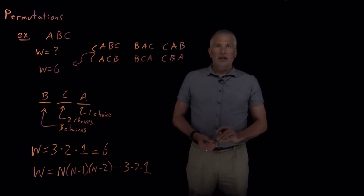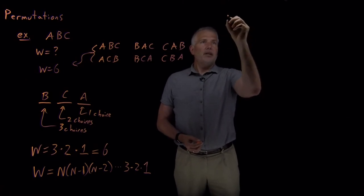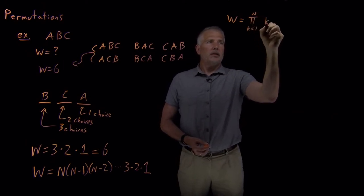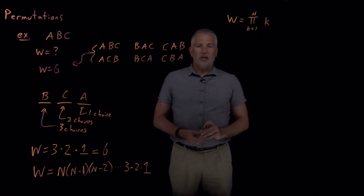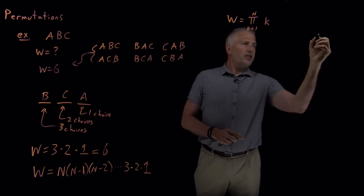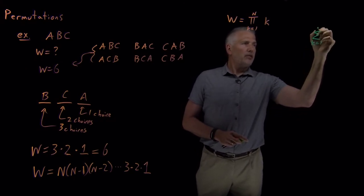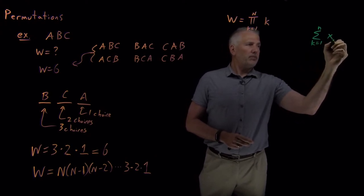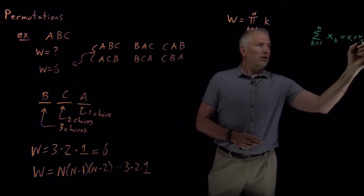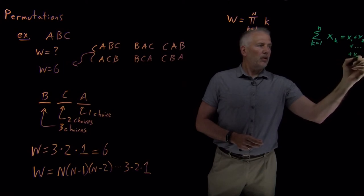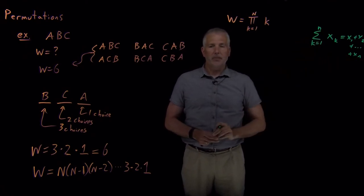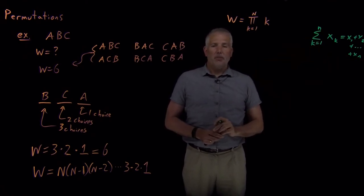A shorter way of writing that down is using what's called product notation. You're probably familiar with summation notation. If I were to write the sum as K runs from one to N of some terms X sub K, what that means is X1 added to X2 all the way up to XN. That's what this big sigma for S means, summation notation.